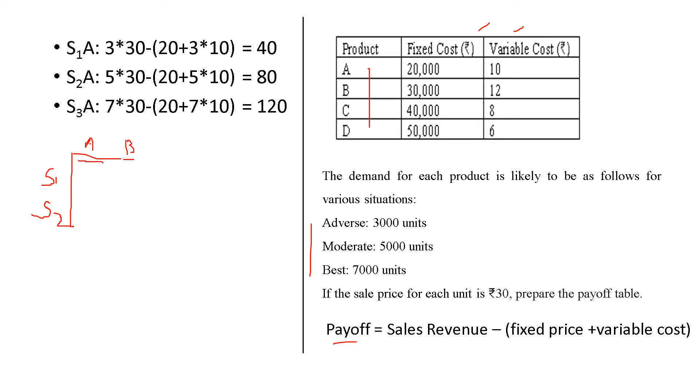The first cell of the payoff table, that is S1, A. Now, S1, A, we have to find the value. Sales revenue, it is given in thousands. That is 30 rupee per unit. We are finding for adverse, moderate and best. So, 3,000 units. That is 3 into 30. That is the sales revenue minus fixed price. For A, the fixed price is 20,000. So, 20 plus the variable cost. Variable cost per unit is 10. For adverse, it is 3,000 units. So, 3 into 10. That is 40.